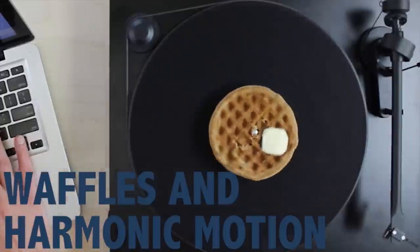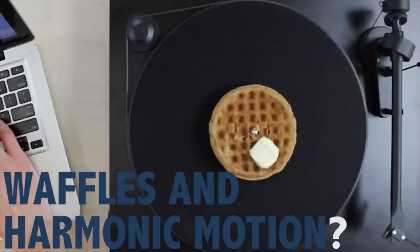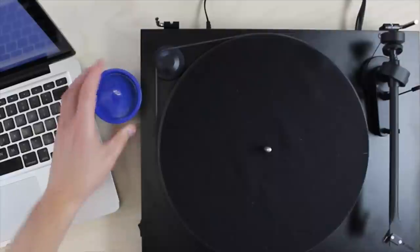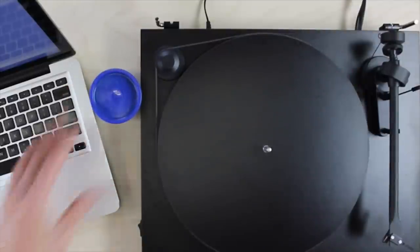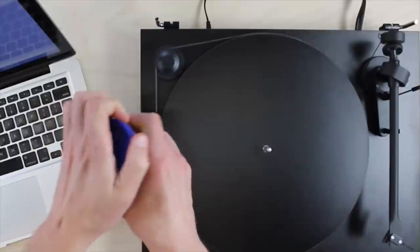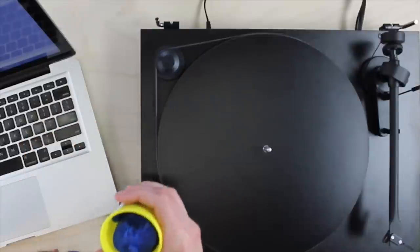And why is this video called Waffles and Harmonic Motion? Well, first of all, waffles are delicious, and secondly, circularly shaped. When an object moves in a circle, its motion is constrained in space in a very specific way.